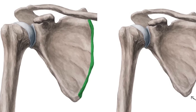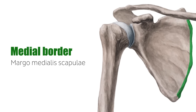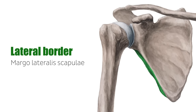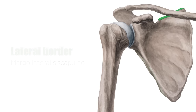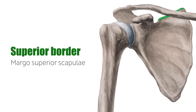Next are the borders of the scapula. The medial border, which is the longest and faces the vertebral column. The lateral border, which is the border of the scapula facing the humerus. And the superior border, which is the shortest and thinnest.